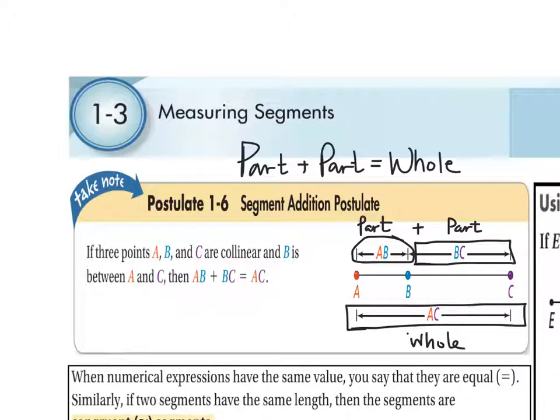So part plus part equals whole. From point A to point B, if I take that and I add that to segment B to C, if I add those two things together, it's going to give me the whole segment. So this is the segment addition postulate, postulate 1-6, and this is the only postulate for section 1-3.